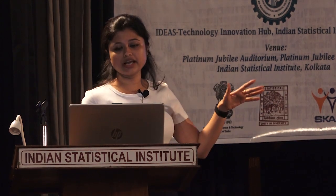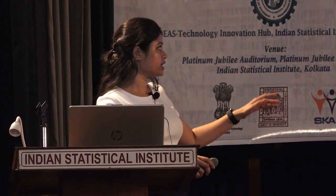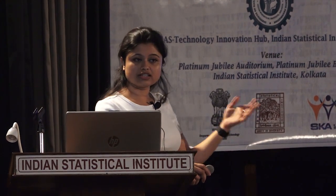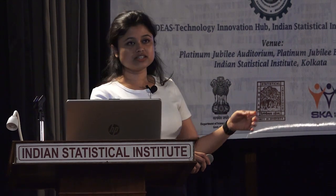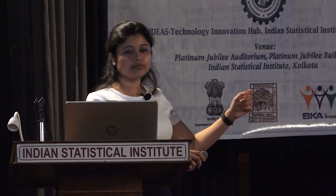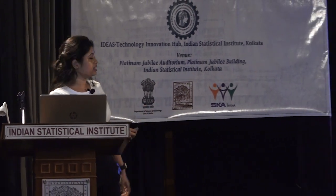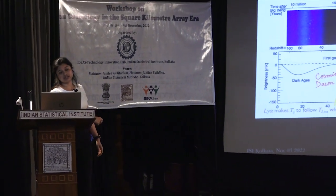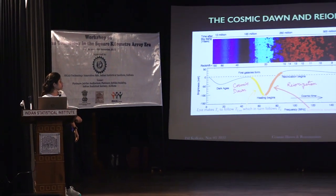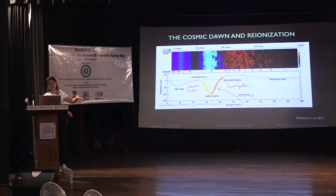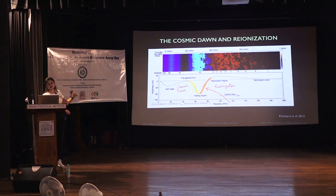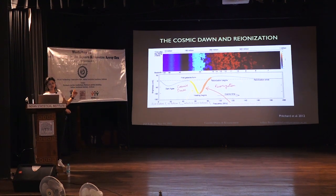I am mostly interested in the Cosmic Dawn period, because with the formation of these first stars and galaxies, the Lyman-Alpha photons from these first stars couple the spin temperature to the gas kinetic temperature, and that gives rise to these absorption profiles. Because of the presence of luminous sources in the intergalactic medium, these absorption profiles start to rise and it goes to emission.